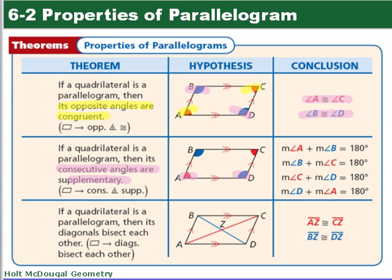All right, in our last theorem, if a quadrilateral is a parallelogram, diagonals bisect each other. Remember, bisect means cut into two equal pieces. That means that this segment is going to be congruent to this piece. So AZ is going to be congruent to CZ. And then likewise, BZ is going to be congruent to ZD.